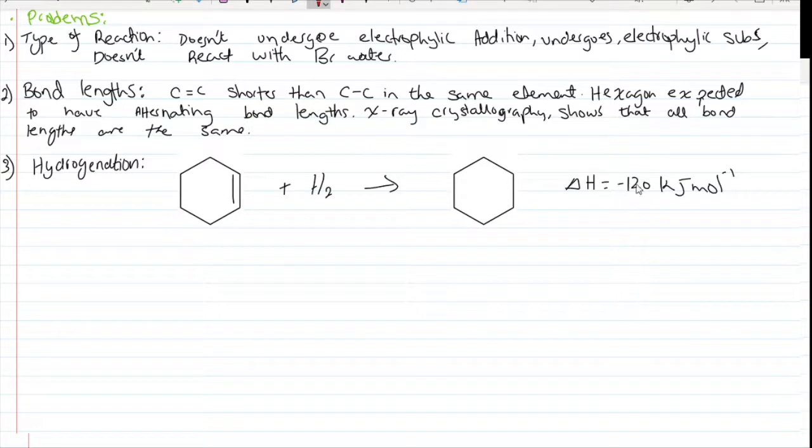This has an enthalpy of minus 120 kilojoules per mole. If we take Kekulé's model with three double bonds, we have three hydrogen molecules. We would expect three times the enthalpy, so it would be expected to have minus 360 kilojoules per mole.